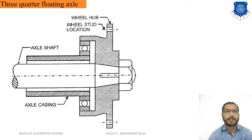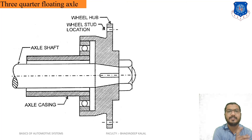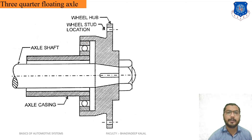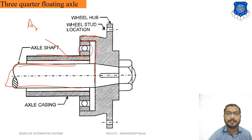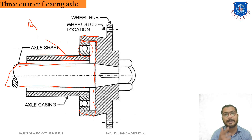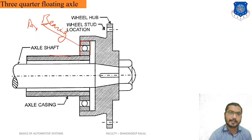The three-quarter floating axle is in between the robust full-floating axle and the simple semi-floating axle. In this type, a bearing is provided between the axle casing and the wheel hub — this is different from the semi-floating axle, where the bearing is between the axle casing and the axle shaft.